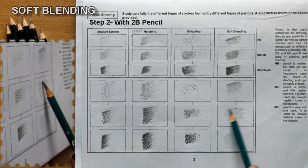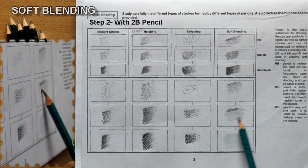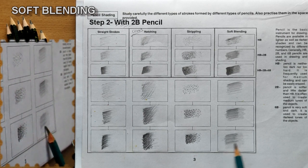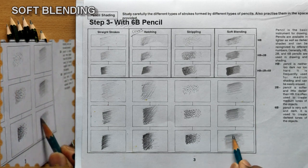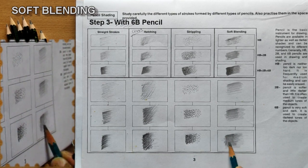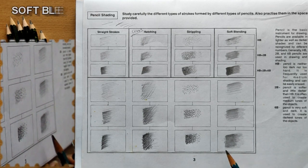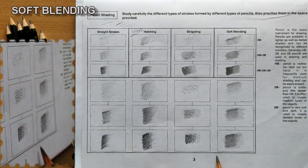Take a 2B pencil and follow the same, just reducing the area covered. Then take a 6B pencil for a darker shade where you want the darker side.